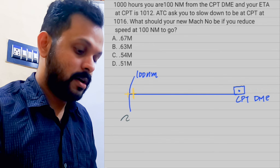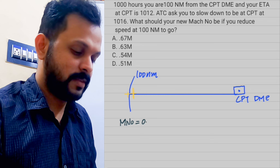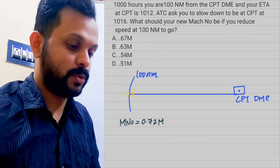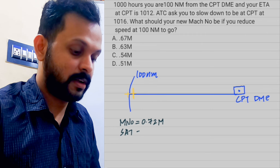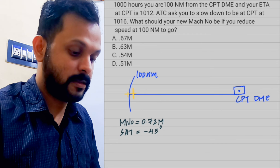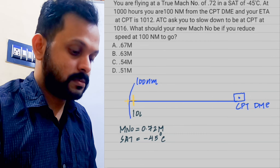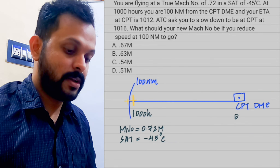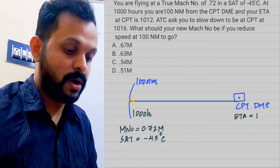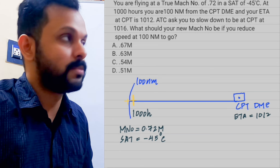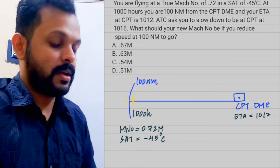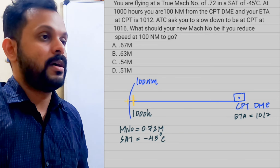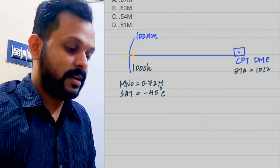You're flying at a Mach number of 0.72, which simply means your true airspeed is 72% of the local speed of sound. You have a static air temperature — the corrected outside air temperature — of minus 45 degrees Celsius. At 1000 hours you're 100 nautical miles from the DME, and your ETA at the DME is 1012. The whole journey over 100 nautical miles is happening over 12 minutes.